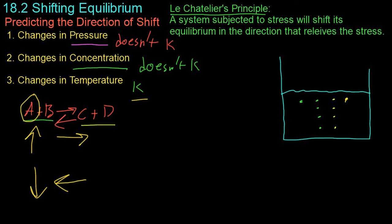If you were to instead change the concentration of products, an increase of products will shift it to the left, and a decrease in products will shift it to the right.